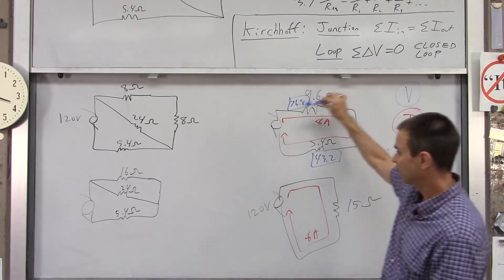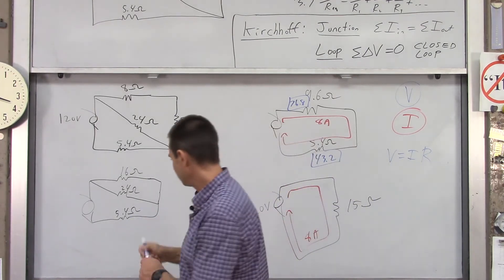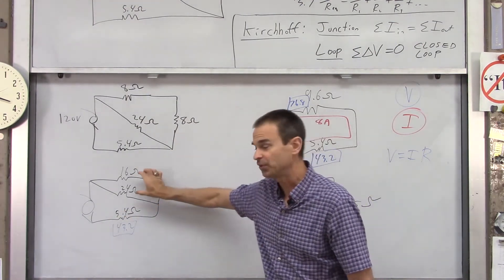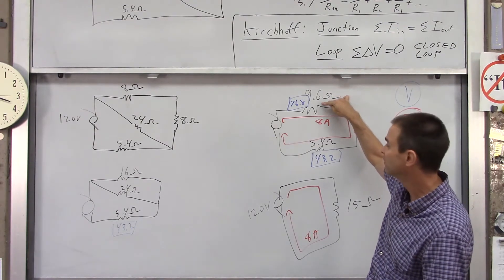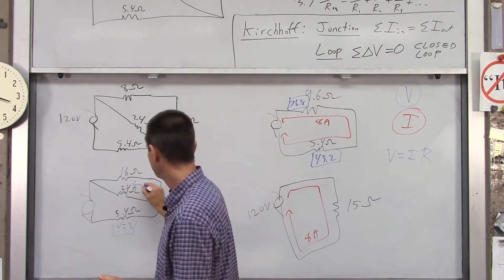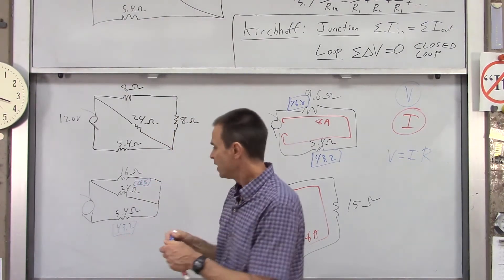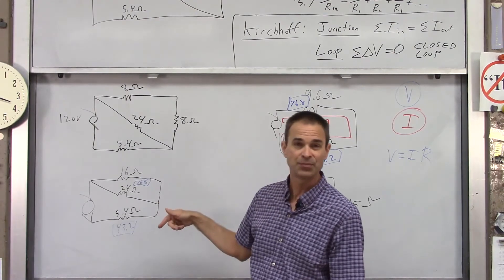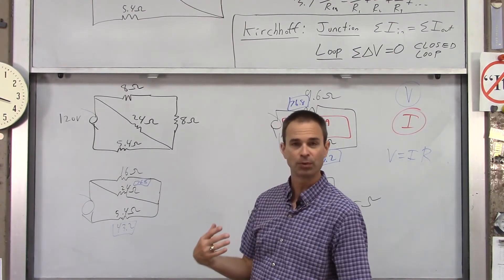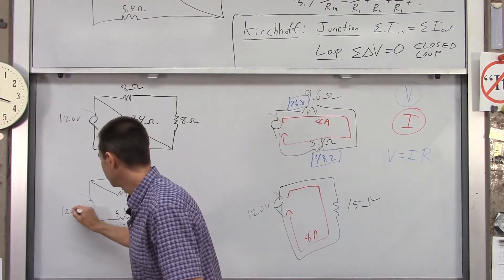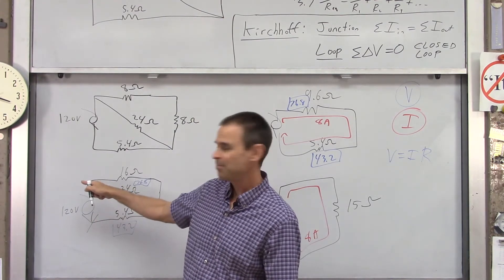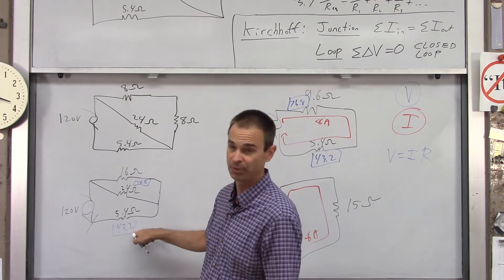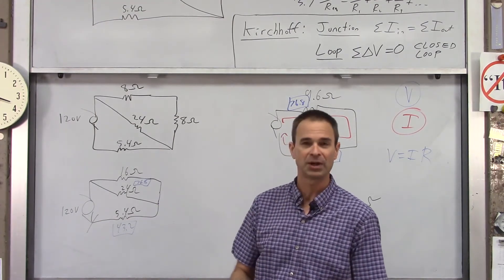The 5.4-ohm resistor carries 43.2 volts. The parallel pair of 16 and 24 ohms both share 76.8 volts — whether Joe Electron goes through the 16-ohm or 24-ohm path, he loses 76.8 volts. Kirchhoff's loop rule checks out: starting from the source, going up 120 volts, dropping 76.8, then dropping 43.2 brings you back to zero.